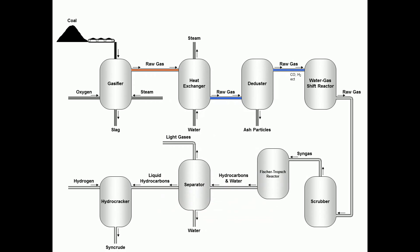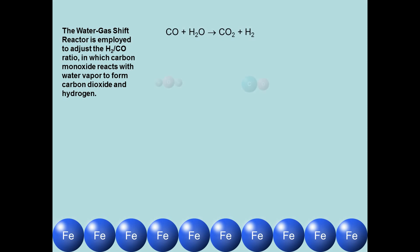After dedusting, the raw gas is sent to a water gas shift reactor. The water gas shift reactor is equipment for adjusting the ratio of hydrogen to carbon monoxide. In the reactor, carbon monoxide reacts with water vapor to form carbon dioxide and hydrogen.